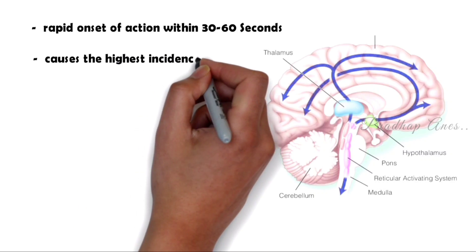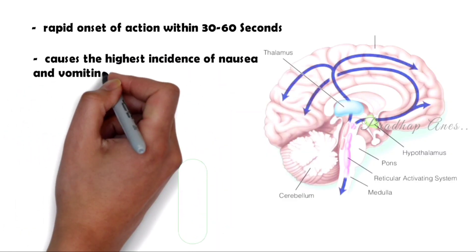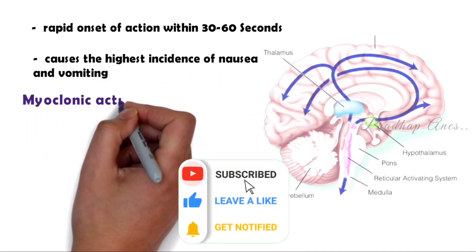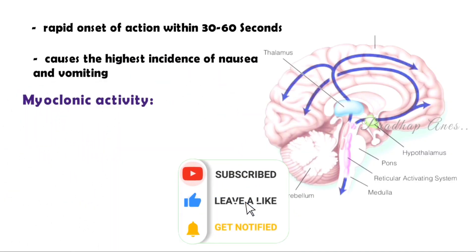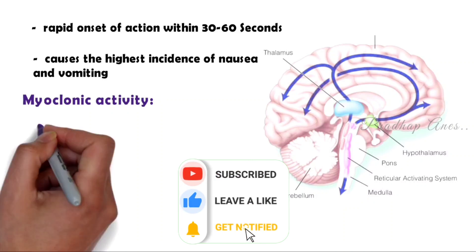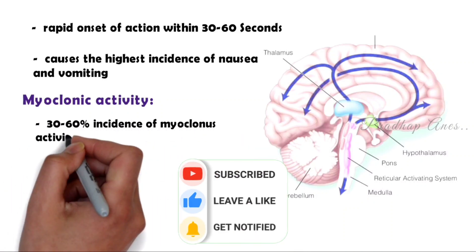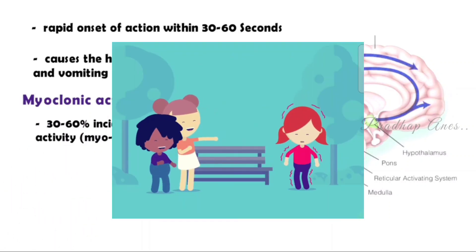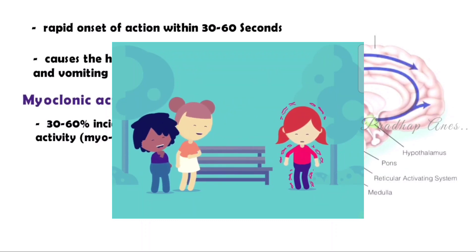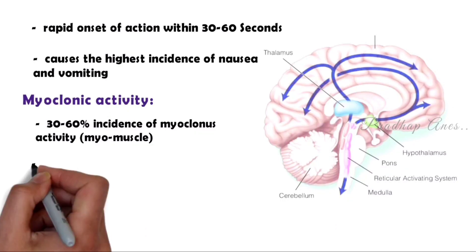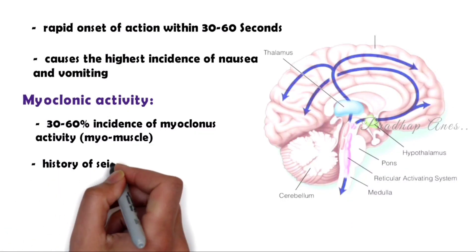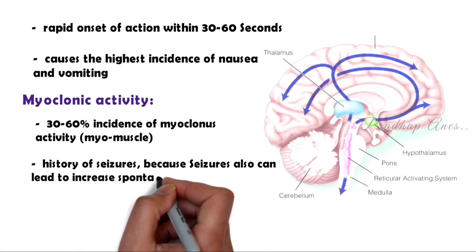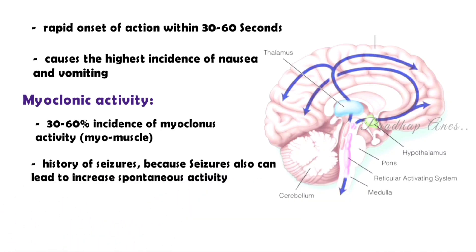It causes the highest incidence of nausea and vomiting. Regarding myoclonic activity, it has a 30 to 60 percent incidence of myoclonic activity — that means there is spontaneous movement of muscle. So we are careful to take the history of seizures, because seizures also can lead to increased spontaneous activity.